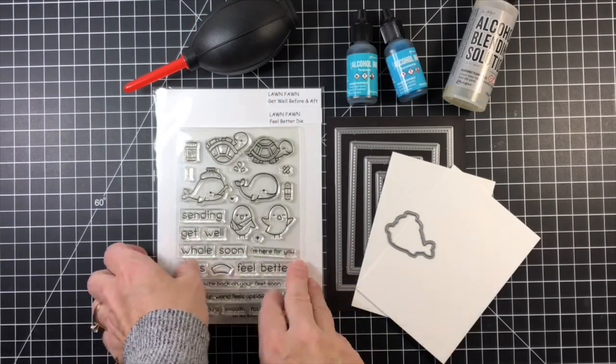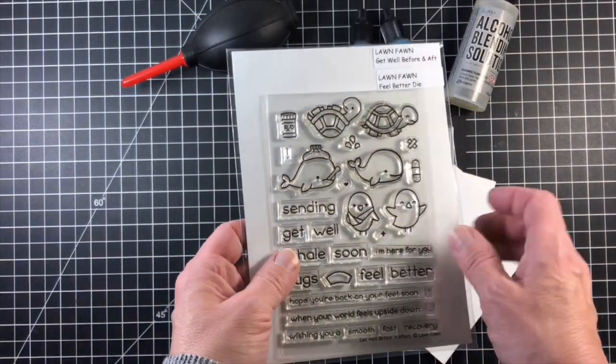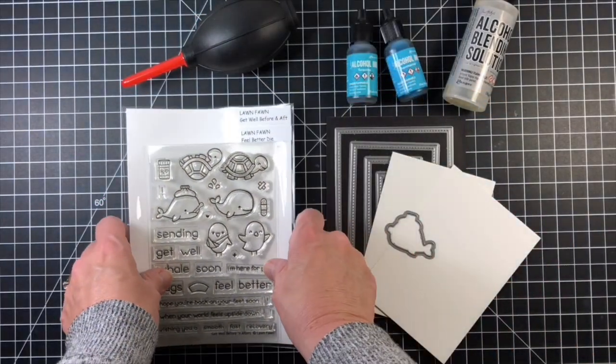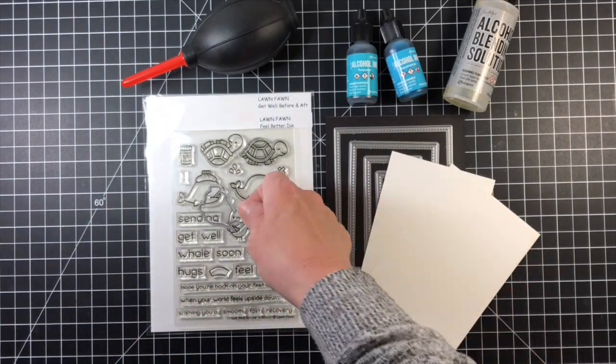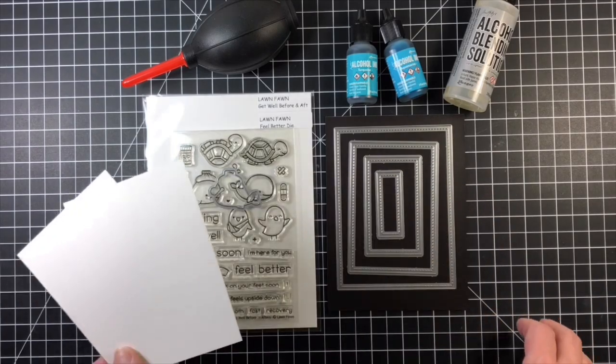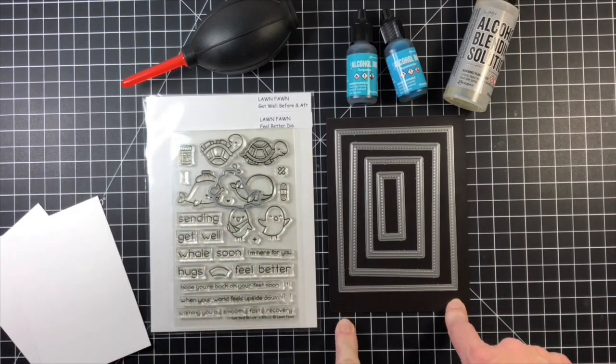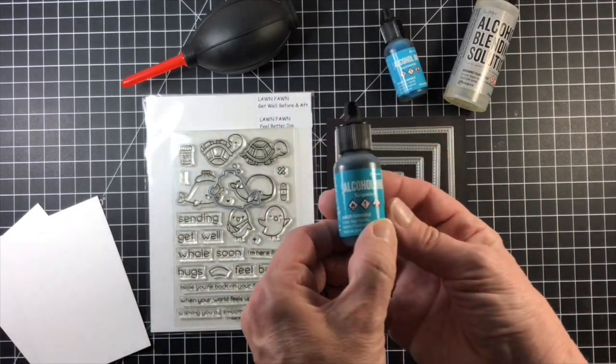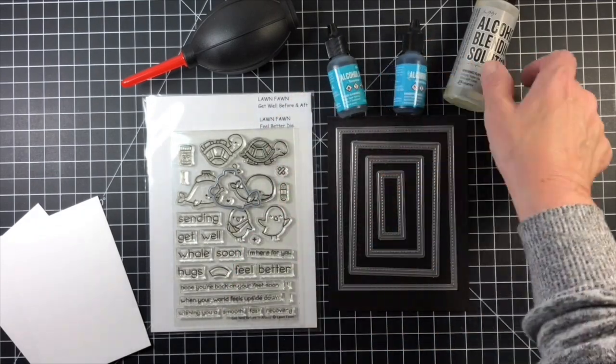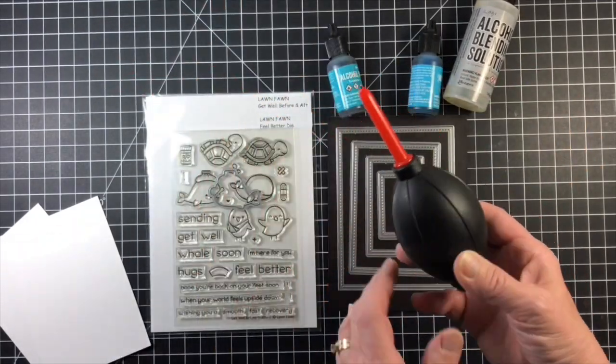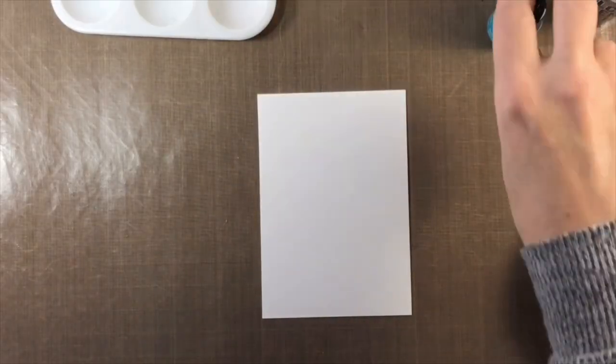For my card today I'm using alcohol inks to create a fun background for this adorable Lawn Fawn Get Well Before and After stamp set. I have the stamp set and matching dies for the whale image that I'll be using, some Yupo paper, stitch rectangle dies, alcohol inks in turquoise and aquamarine, some alcohol blending solution, and a camera lens puffer to help me move my ink around on the paper.